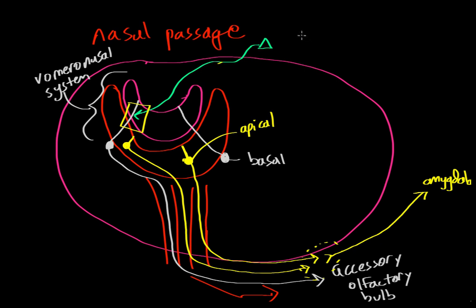Now interestingly, in humans, we have evolved to rely very little on pheromones. So we do have a vomeronasal organ. However, we do not have an accessory olfactory bulb. So we rely very little on pheromones.